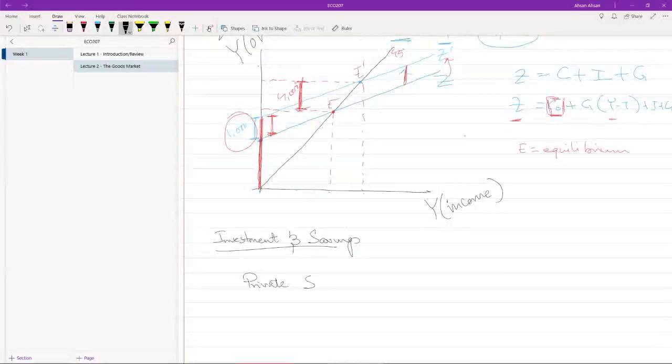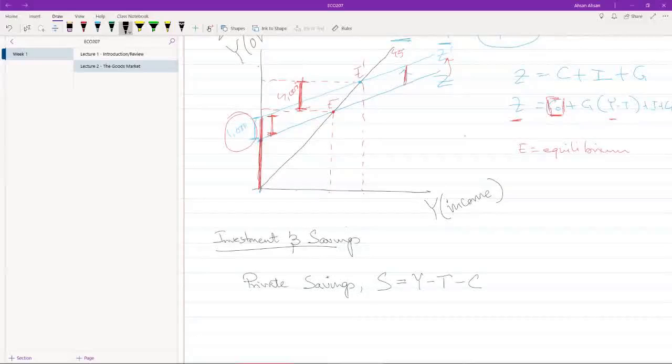Private savings first. Private savings means savings of the people, so for you and me and so on. It's equal to how much we save. We have an income, from this income we pay tax, which gives us a disposable income. Out of this disposable income we consume, and whatever is left is our savings.